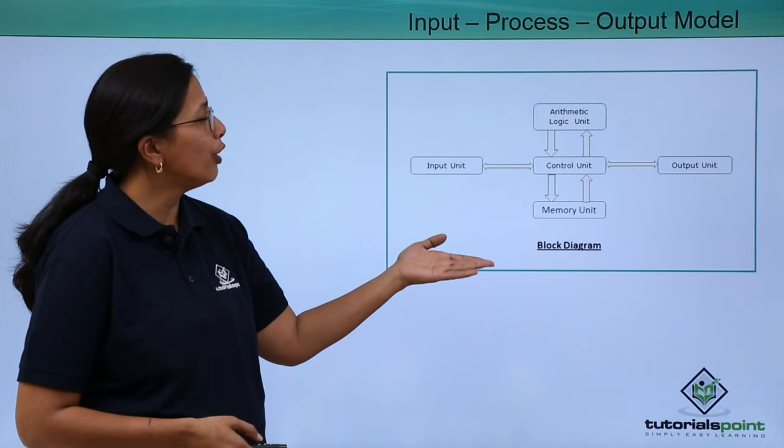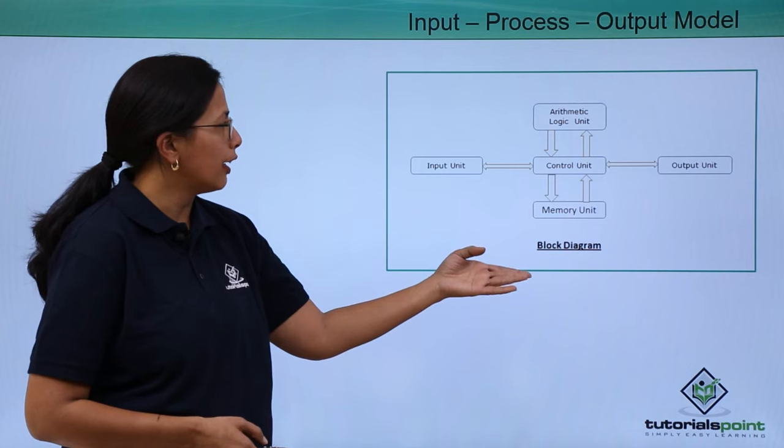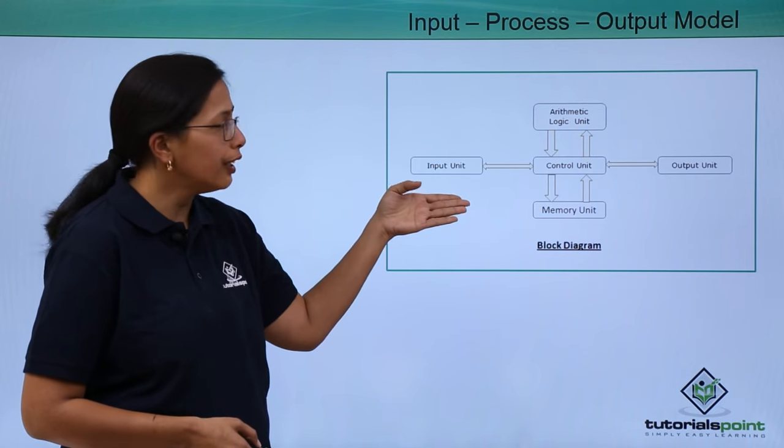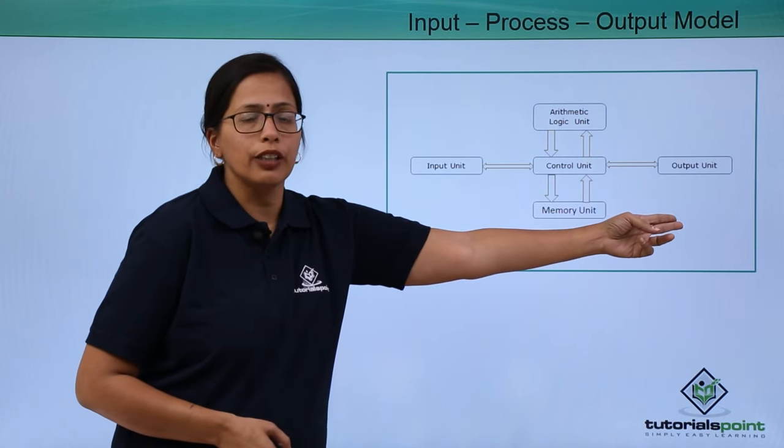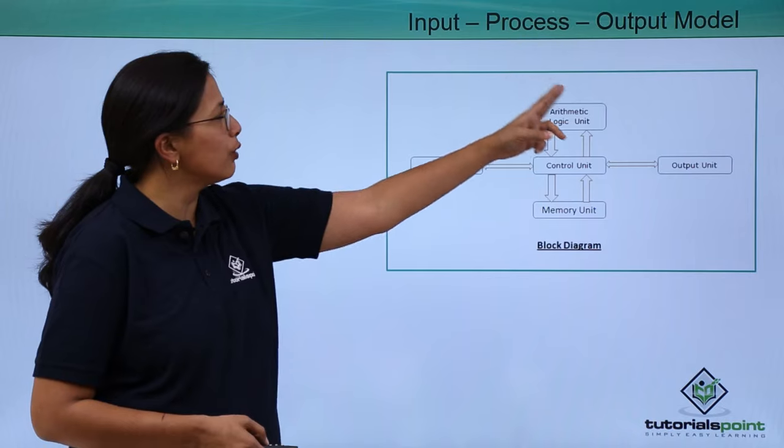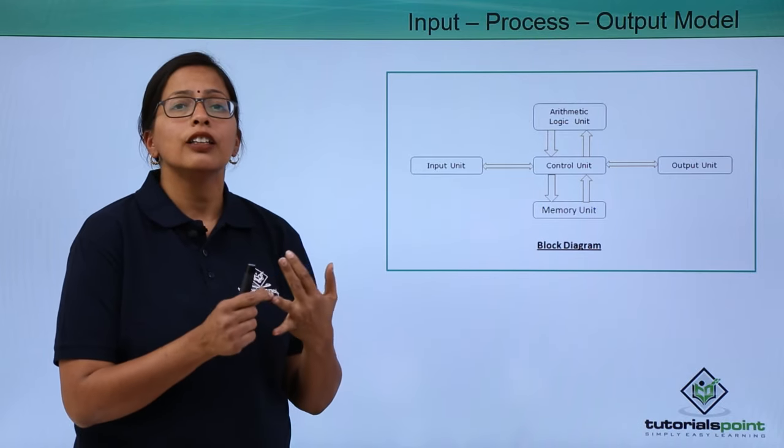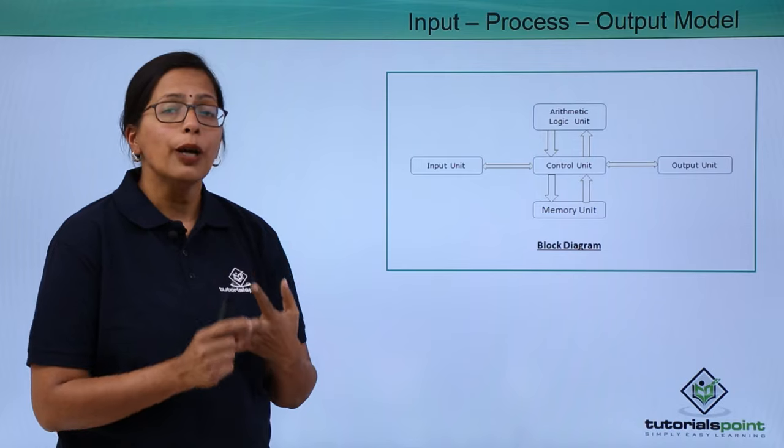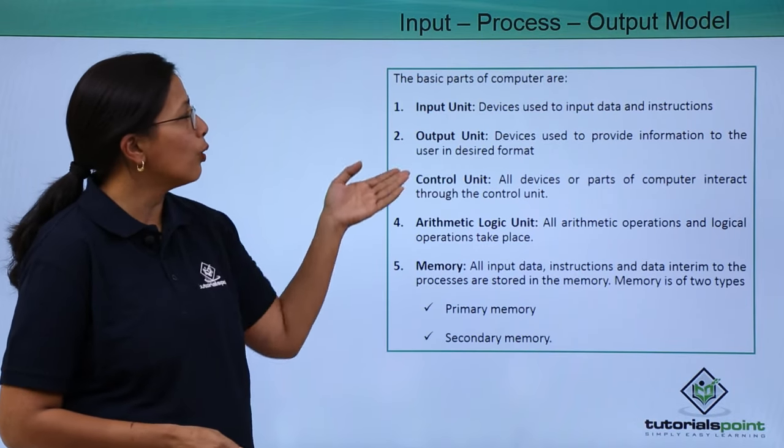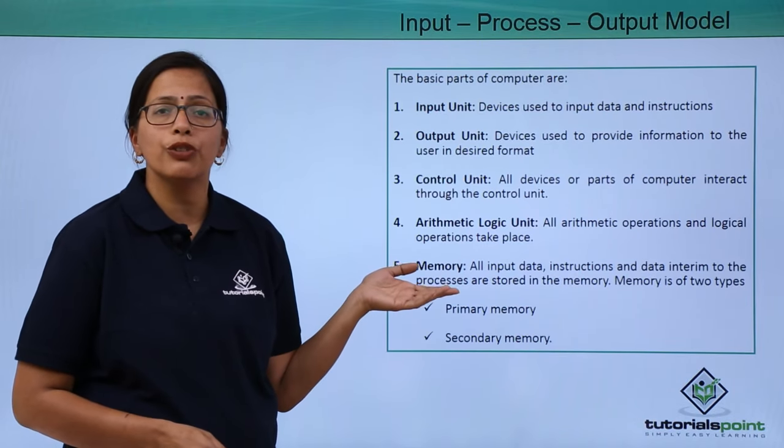This is the actual model of the computer, the block diagram. We have an input unit here and we have an output unit here. However, the processing unit has three separate units: the arithmetic logic unit, the control unit, and the memory unit. Let's see how all these basic parts of computer are functioning.